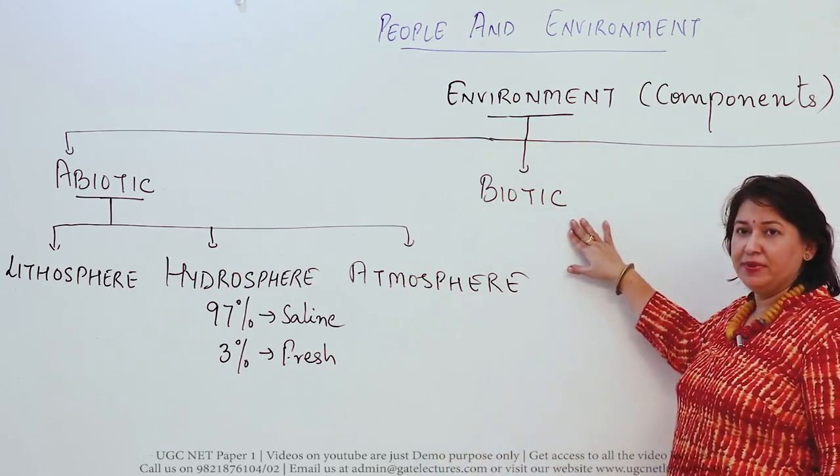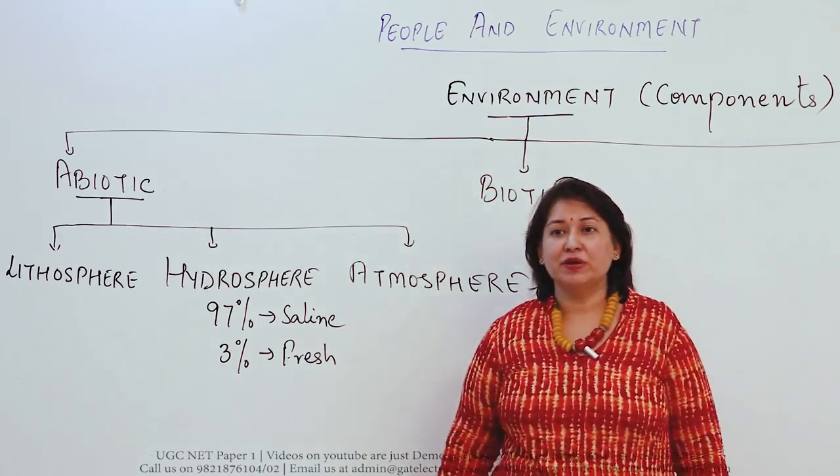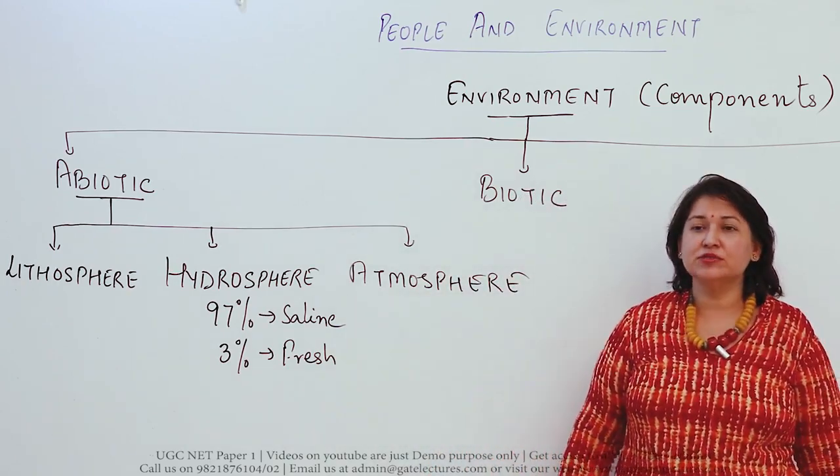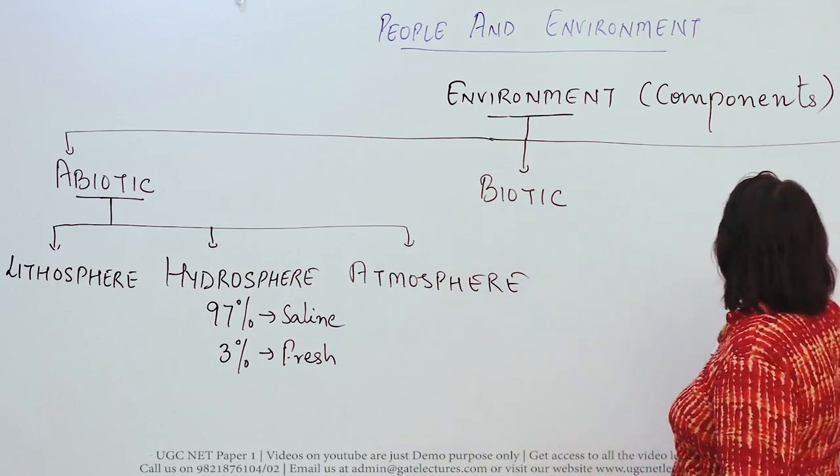The second component of environment is biotic. Bio means life, so biotic means that which is alive. It can be plants, organisms, animals, living beings, or human beings.